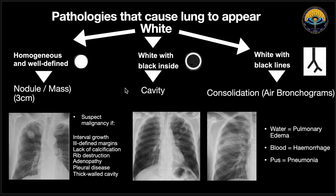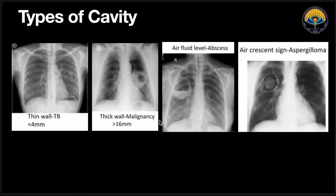Second, there could be whitening with some blackness inside, which would indicate a cavity. We can see in this X-ray of the left upper lobe there is homogeneous opacity with black lucency inside — this is a cavity. Third, we may have whiteness with a black line in between, called air bronchograms, which is seen in consolidation. If the whiteness is due to water, it's pulmonary edema; if blood, it's hemorrhage; if pus, it's pneumonia. Here we can see diffuse opacification with air bronchograms, indicating consolidation in pneumonia.